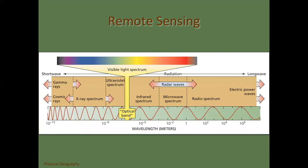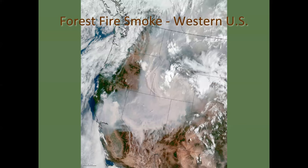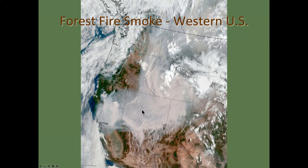Remote sensing is basically measuring the interaction of the world with infrared and visible light. Our eyes can see the visible spectrum, but there's energy the sun radiates on either side that we can't see. Here's an image of remote sensing showing all the fire smoke from a couple years ago in California, Nevada, Utah, Idaho, Washington, Oregon, Montana, and Wyoming. Clouds are white, forests are green, water is blue, smoke is gray — you can see the effect of so many fires across the western U.S.